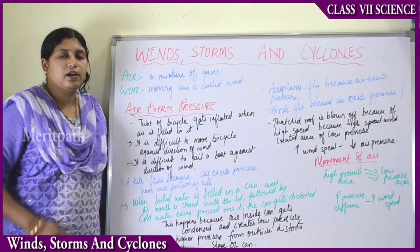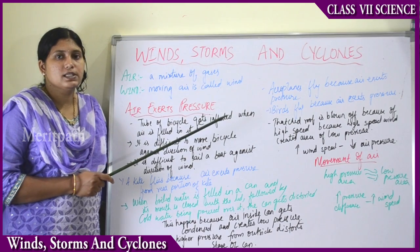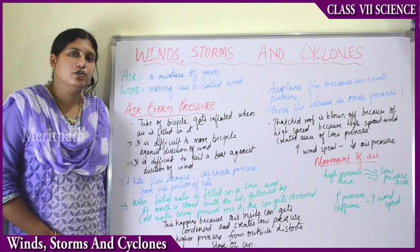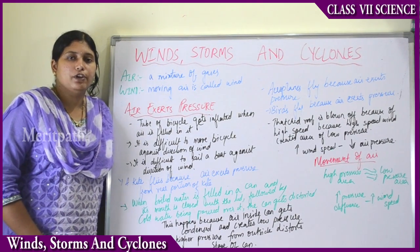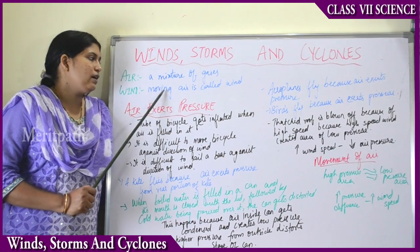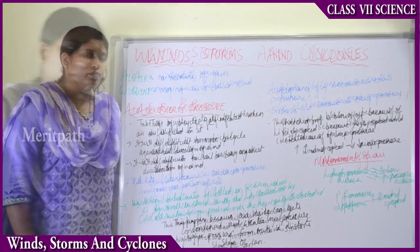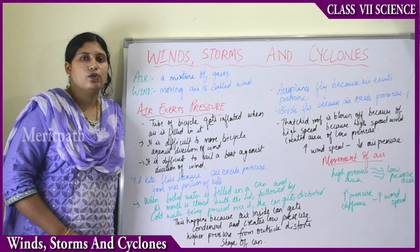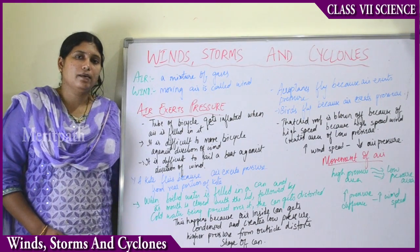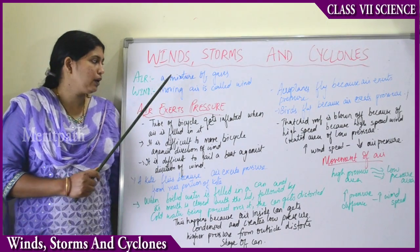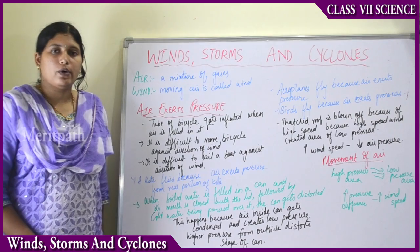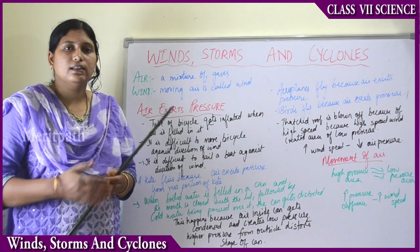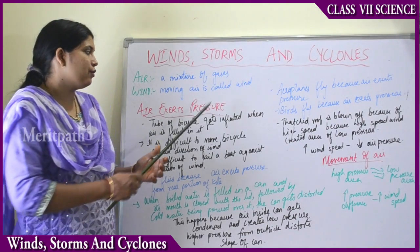The new chapter we are going to study is 'Winds, Storms and Cyclones.' Air is nothing but a mixture of gases — nitrogen, hydrogen, oxygen, carbon dioxide, and many inert gases in small quantities. Air is present everywhere around us. Moving air is called wind; the flow of air is known as wind.